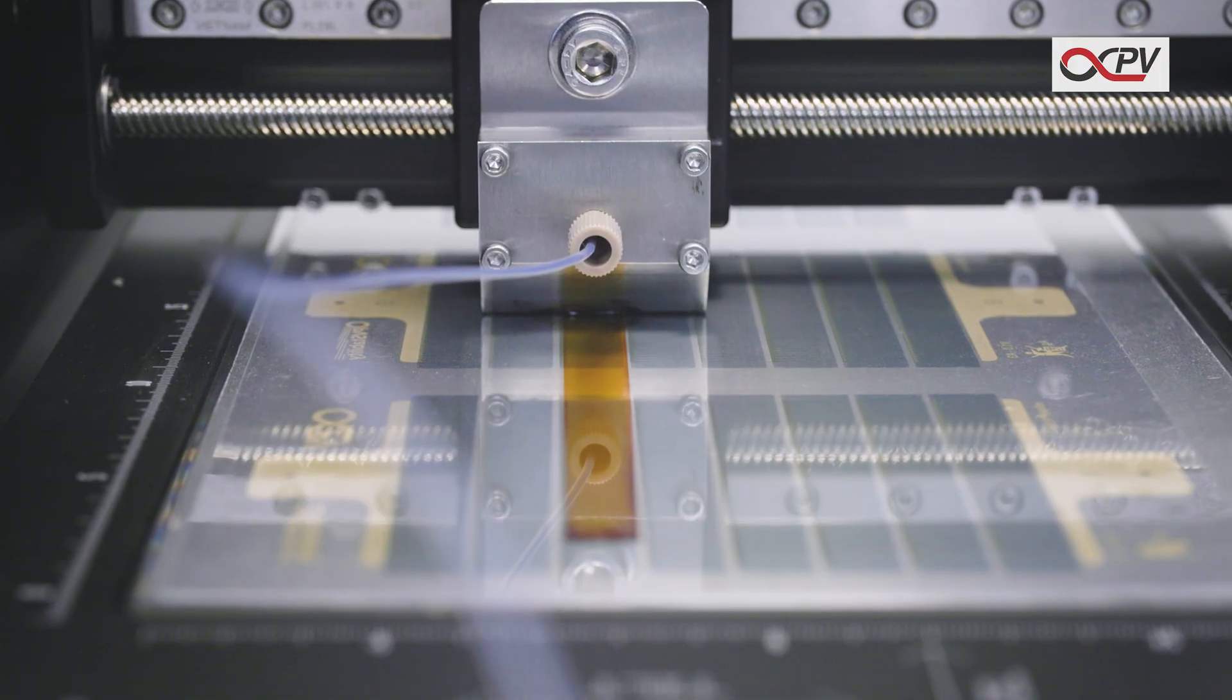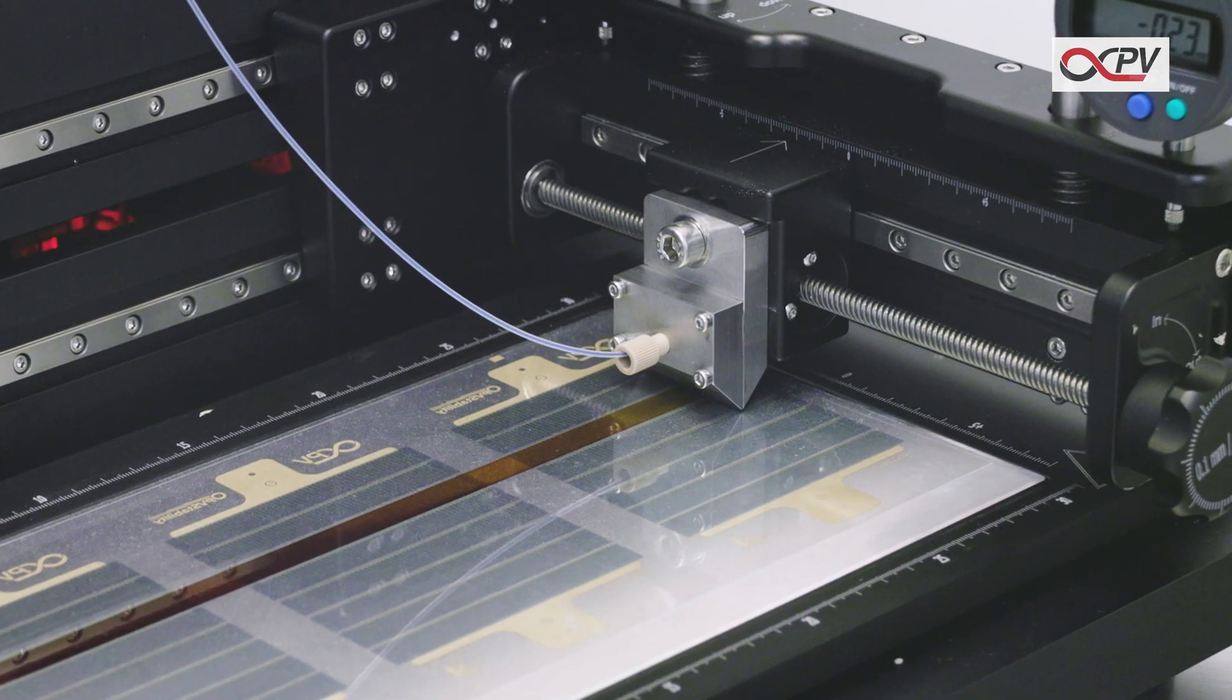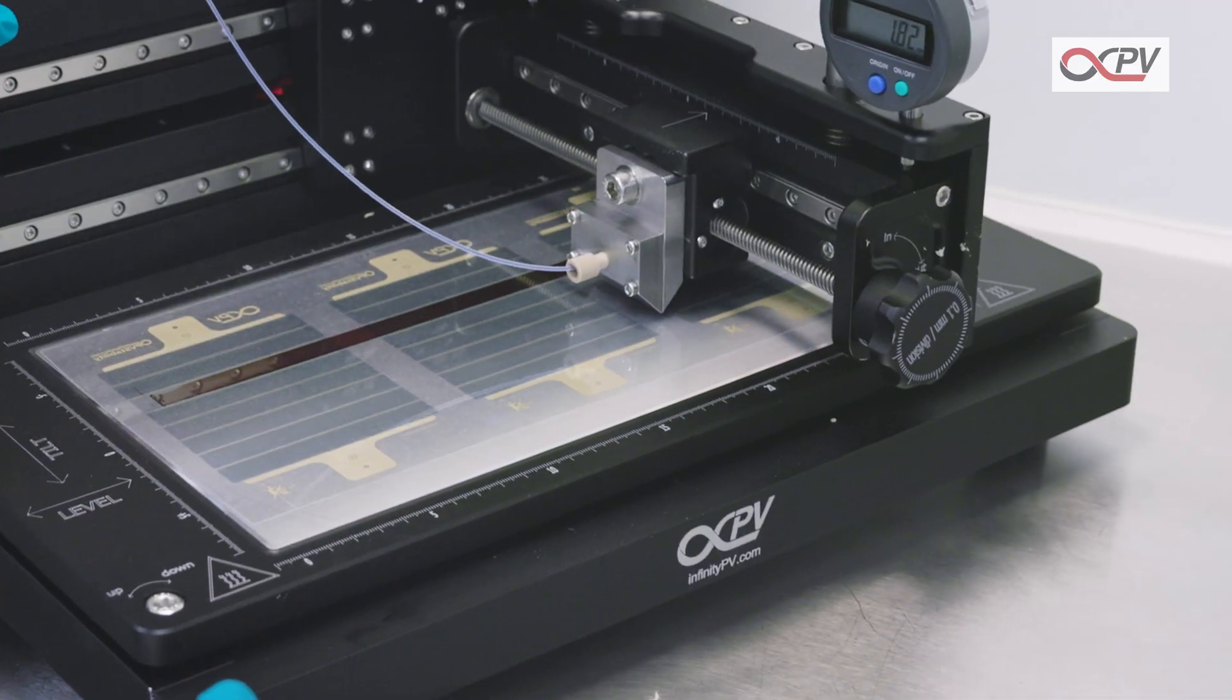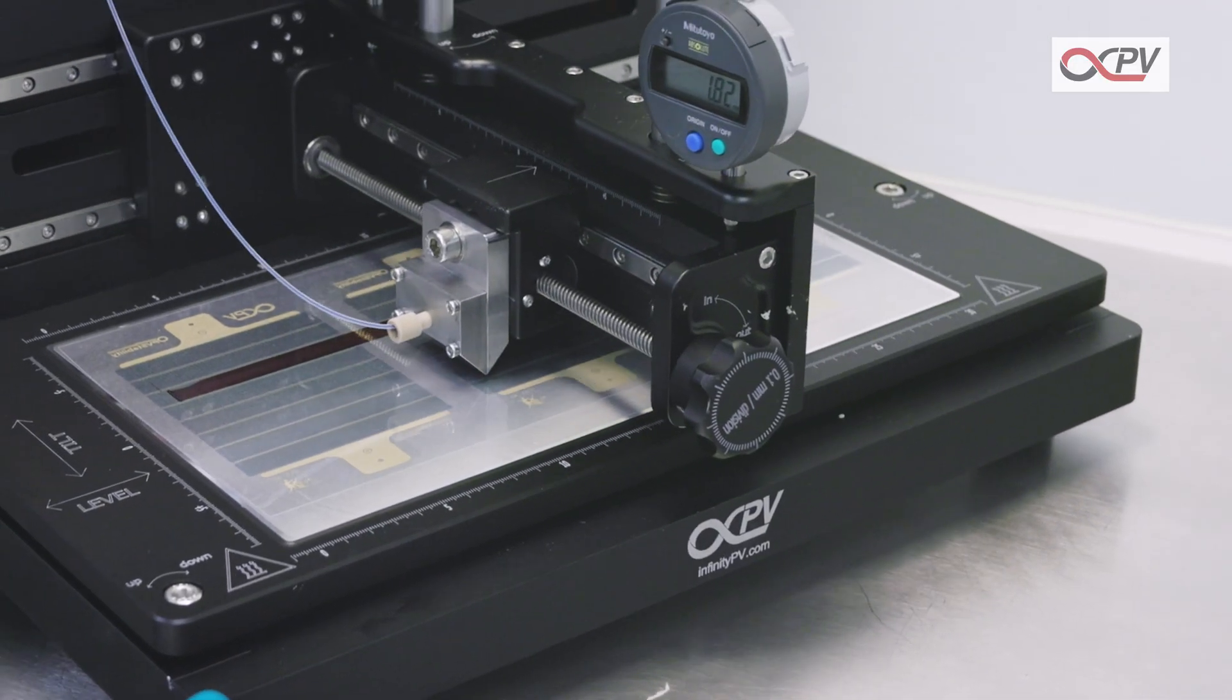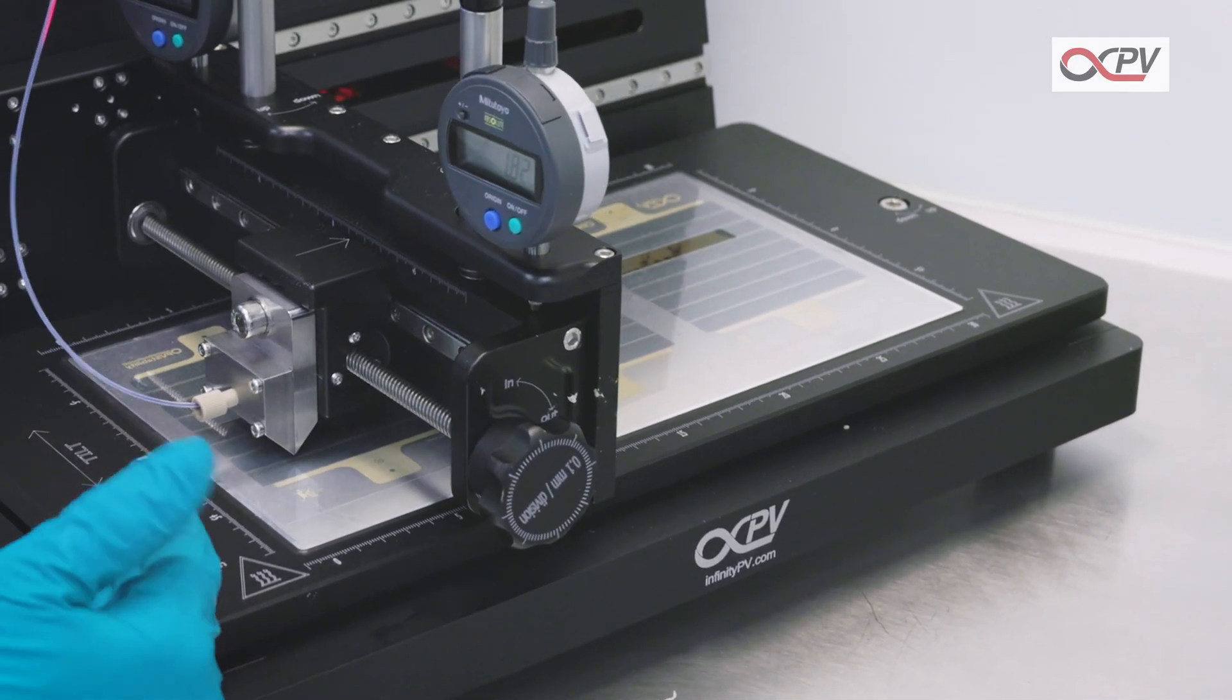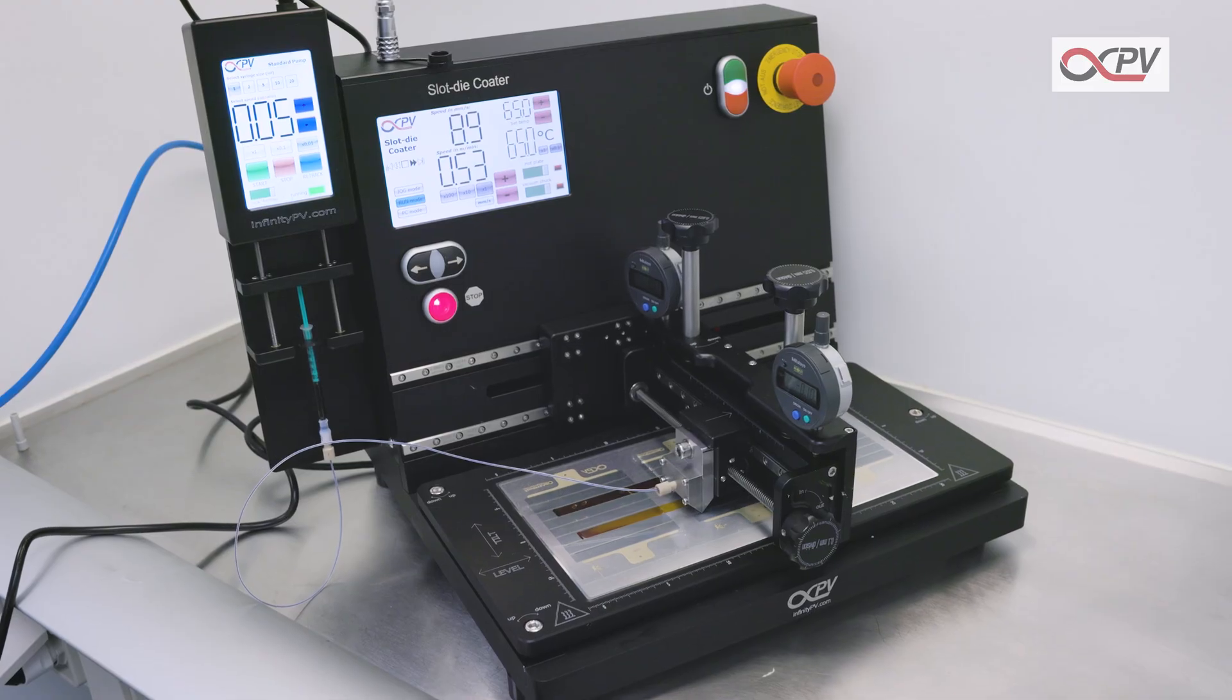The Slot Dye Coater will automatically stop once it reaches the end. Move the Slot Dye Head up and return it to start position. Adjust the cross-web position to coat another stripe.